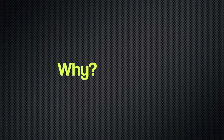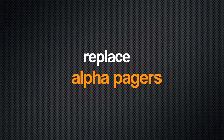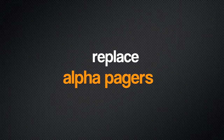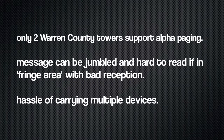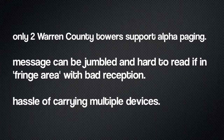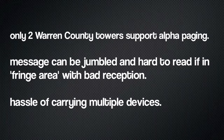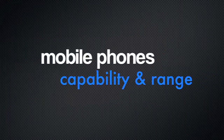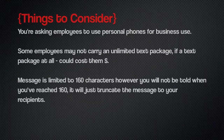Some may ask why this is beneficial. Not everyone has email access on their phones but most do have text messaging. Also, mobile devices are quickly replacing alpha pagers due to the convenience of only carrying one device, and only two Warren County radio towers support alpha pager transmission. Someone's alpha pager may show the message as jumbled if the signal does not come in smoothly. Mobile phones offer the same capability and better range.